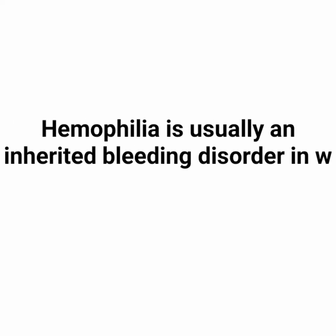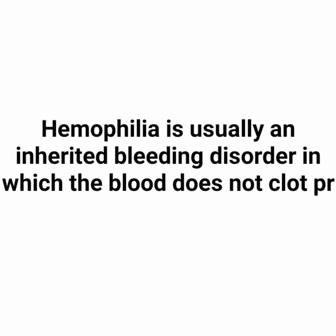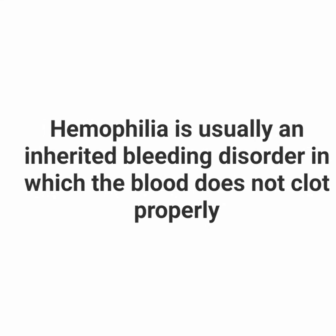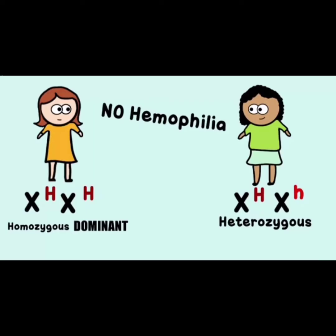An affected or carrier child is mostly associated with hemophilia. Hemophilia is usually an inherited bleeding disorder in which the blood does not clot properly. To determine if a child has hemophilia or not, we first need to identify the alleles.